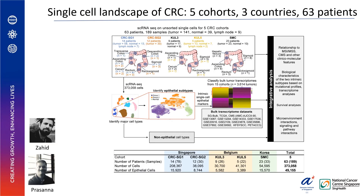In this study, we collected data from five cohorts from three different countries, called CRC-SG1, CRC-SG2, COL3, COL5, and SMC. In total, we have 189 samples from 63 patients, which generated 373,000 high-quality cells. We focused our analysis on epithelial cells, validated our findings using 3,614 bulk transcriptomes, and finally performed an integrative analysis.